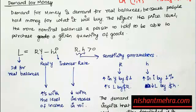To summarize: the IS curve is the combination of interest rate and output that keeps the goods market in equilibrium; the LM curve is the combination of interest rate and output that keeps the money market in equilibrium. For money market equilibrium you need demand for money and supply of money. Demand for money comes from two purposes: transactions demand and speculative demand. Transactions demand is positively related to income — to satisfy daily wants you need money in your pocket.